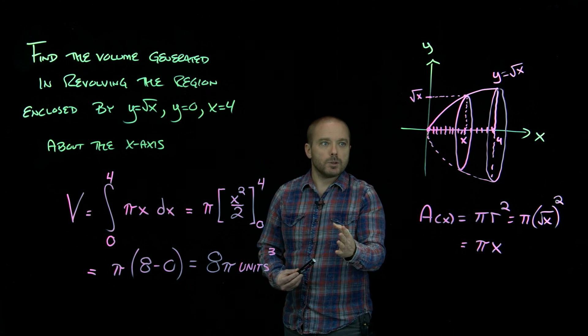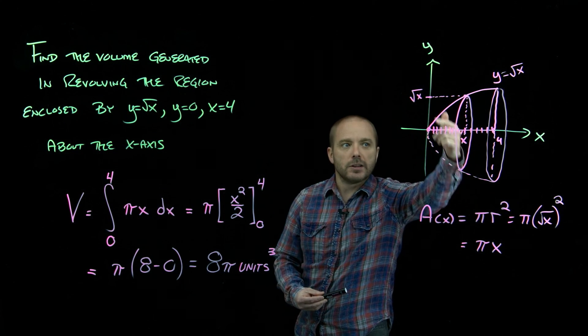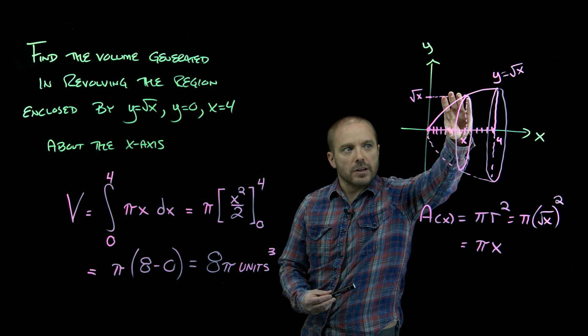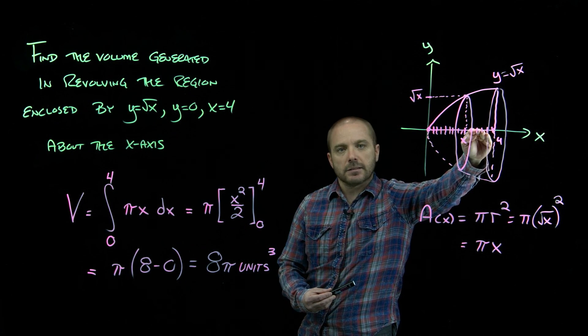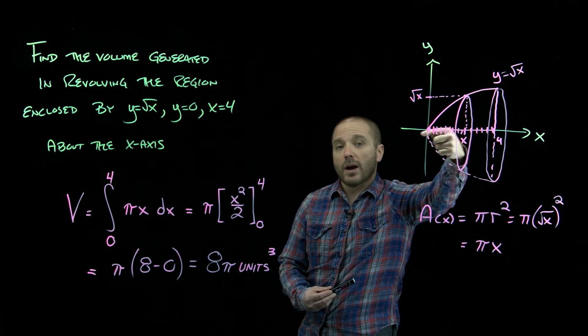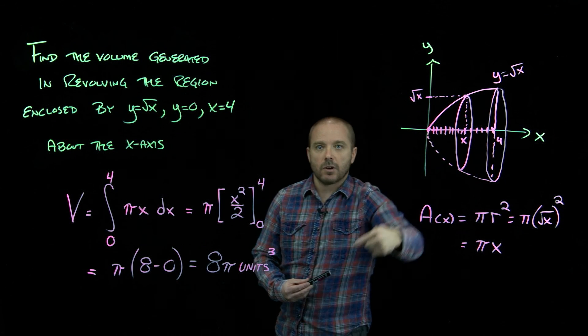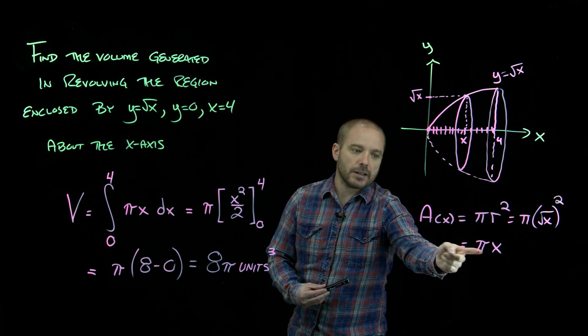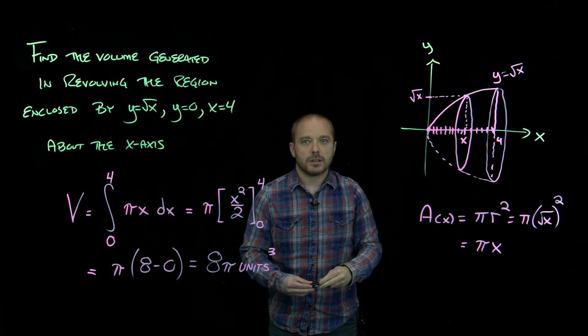Alright, next time we'll look at revolving a region where the curve does not create a region completely up against the axis of revolution. So that we do have a hole in the middle of our volume. It's still going to involve circles, but we have to make a slight adjustment to what this cross-sectional area is.